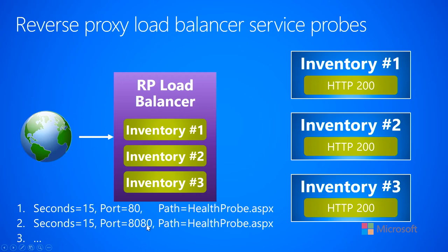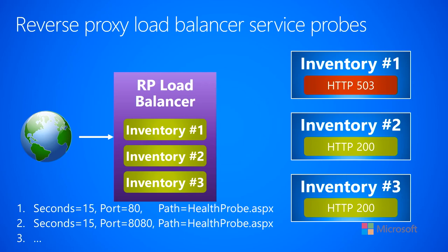Now let's say the load balancer sends a probe out to all those machines and they all return back an HTTP 200 initially. That says to the load balancer that all of these machines are healthy — HTTP 200 means okay. So the load balancer says they're all doing fine, and any request that comes in from the internet can be sent to machine one, machine two, or machine three.